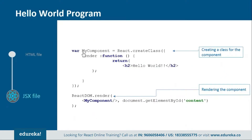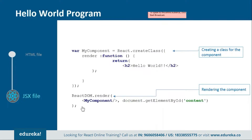If you remember, in the previous JSX file created using npm we created a class called MyComponent, but here we are creating a variable called myComponent — that's one of the minor differences. The variable myComponent has a function called createClass, and inside that we have a render function which returns the HTML representation. Similarly, we call ReactDOM.render specifying our component to be rendered and the place where we want to render it.